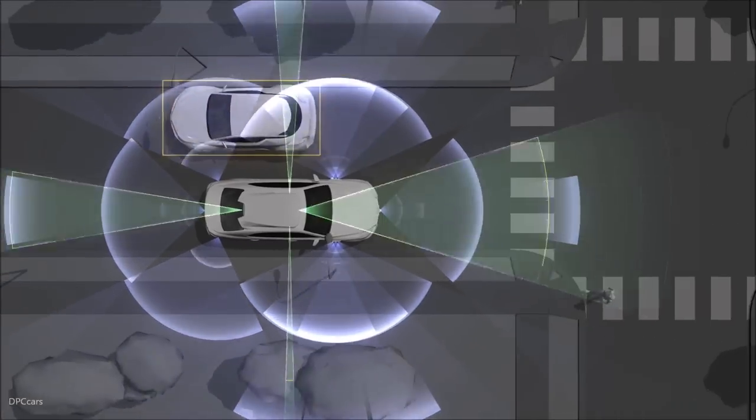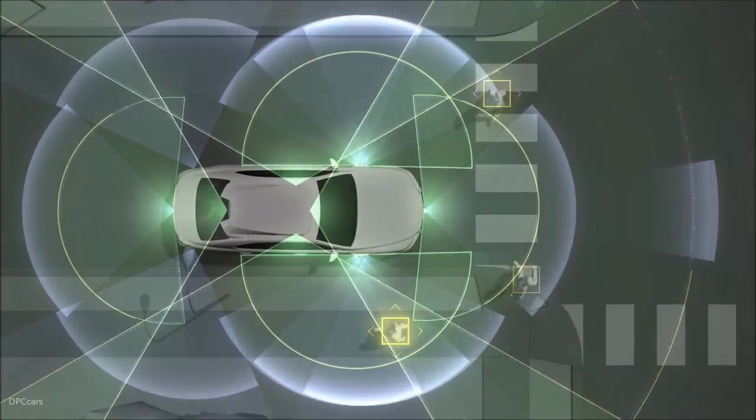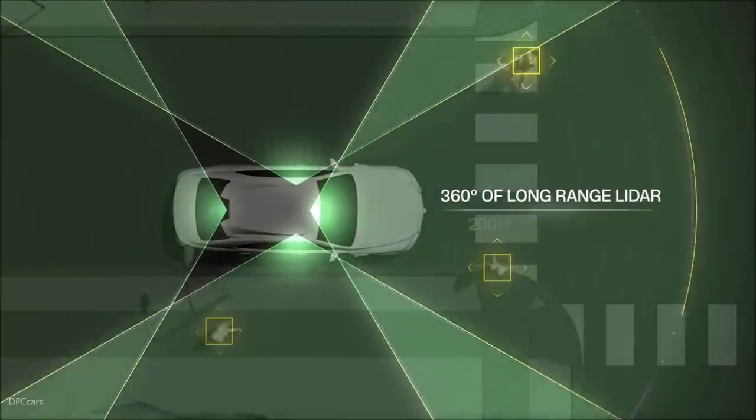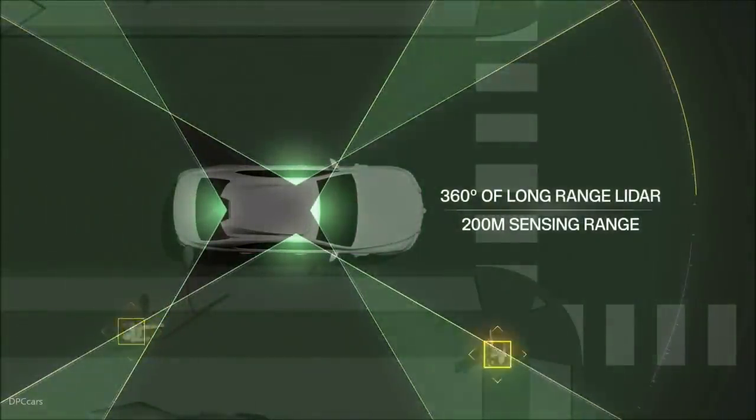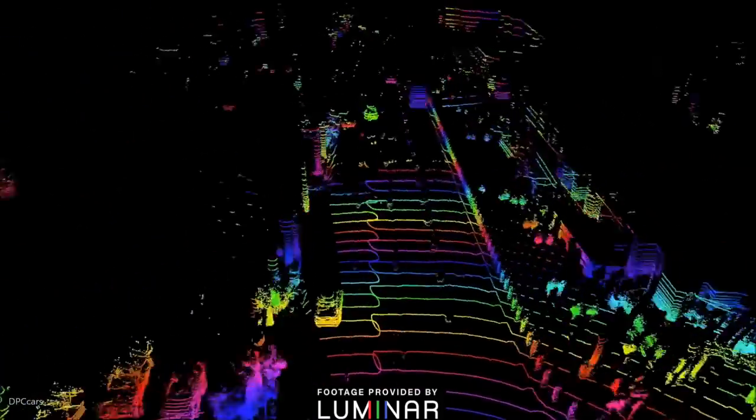The jump that we're making in terms of the LiDAR technology from the 2.0 vehicle to what we're deploying on the 3.0 is a dramatic increase in range and density. We're able to have essentially four of these heads at the 200 meter range and 4x the point density.